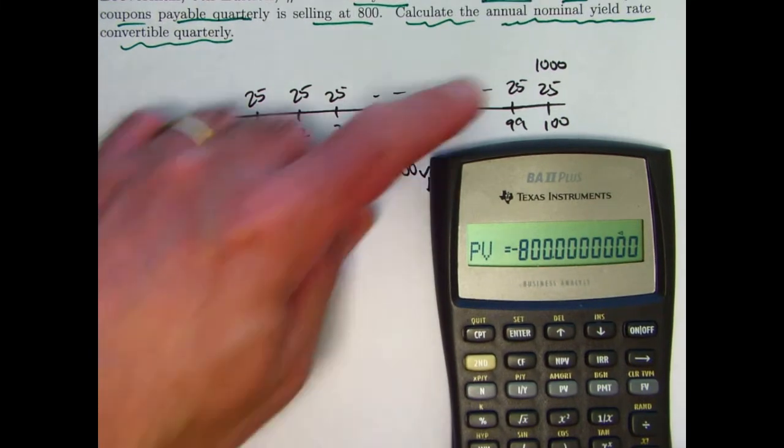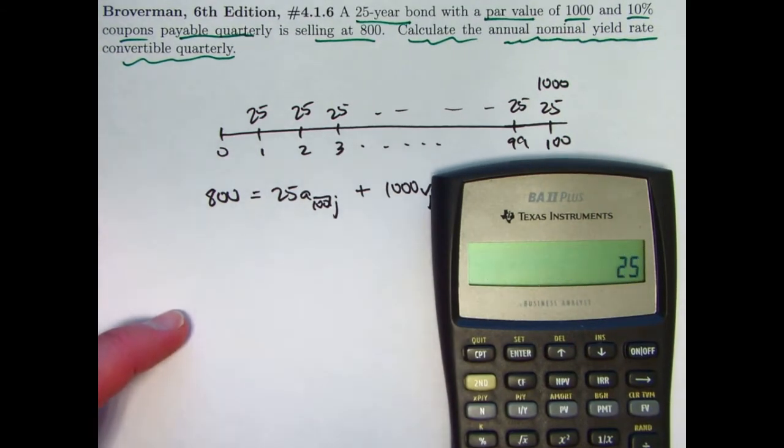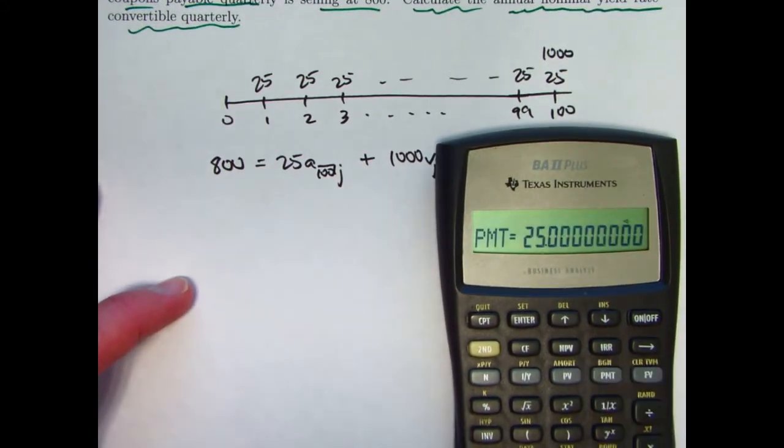These other quantities—the 25s and the 1,000—think of as positive because you're getting those. So store 25 in PMT and 1,000 in FV for future value.